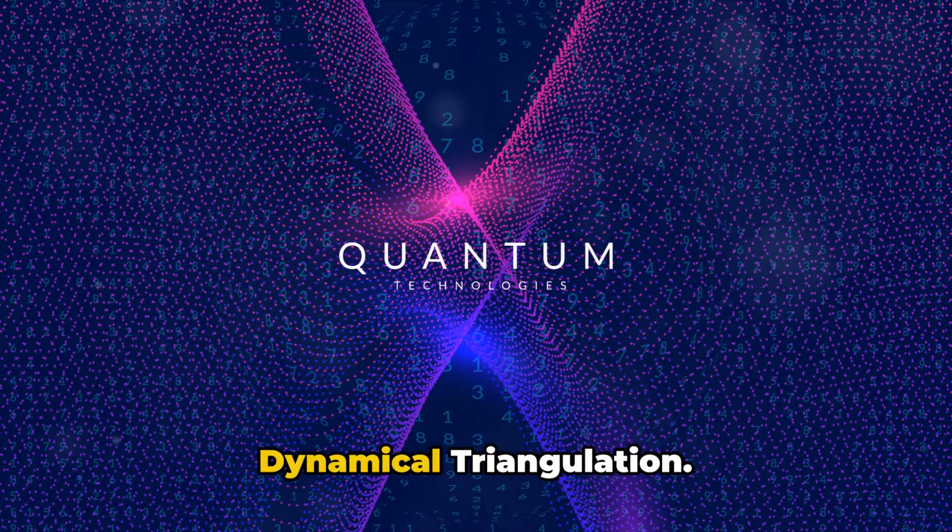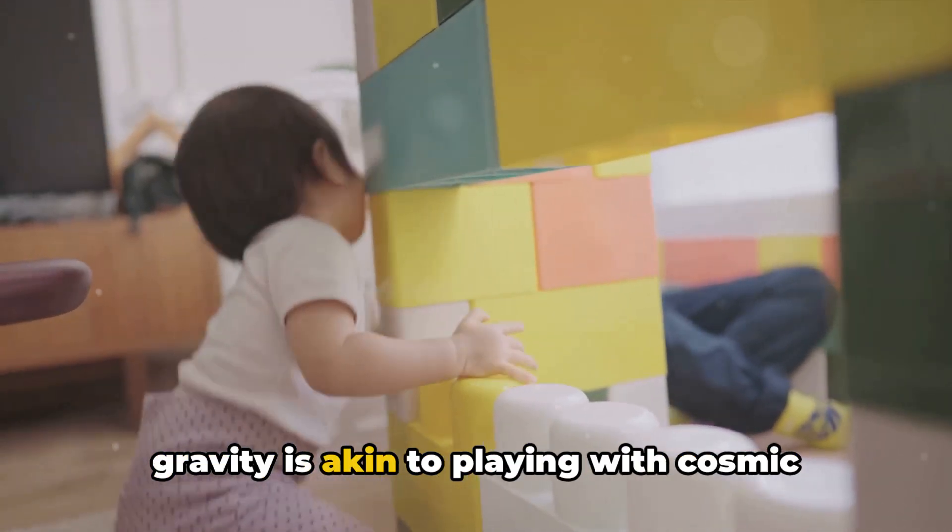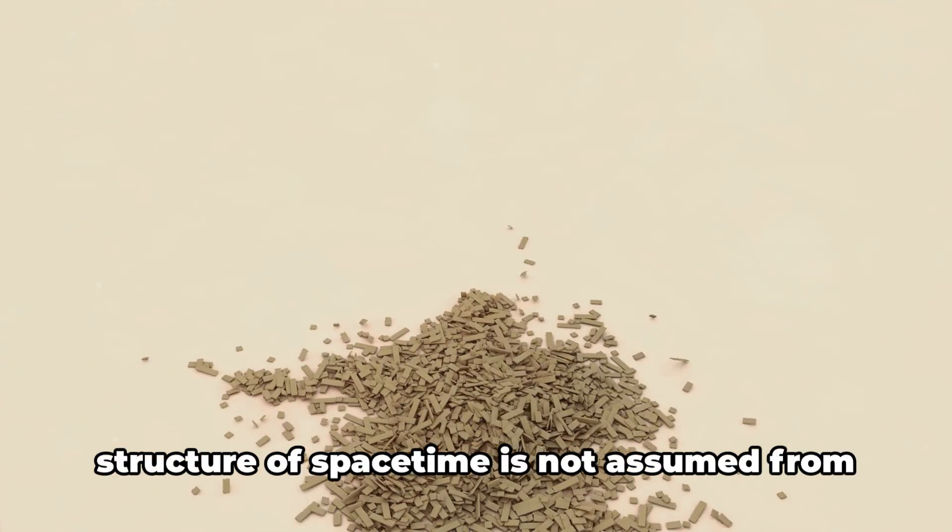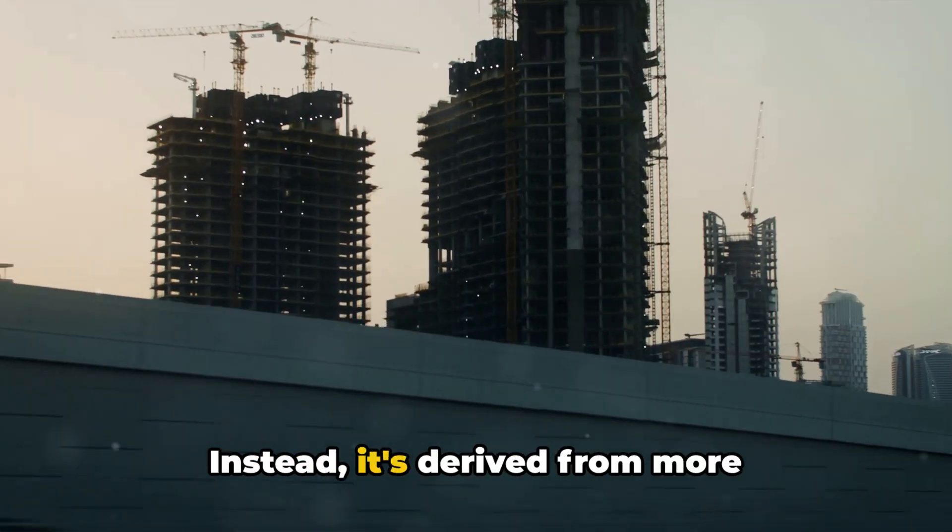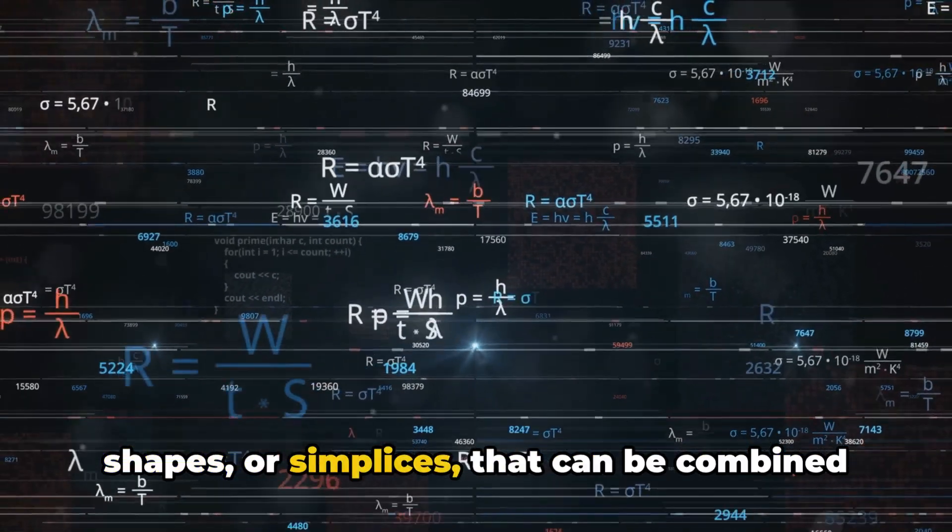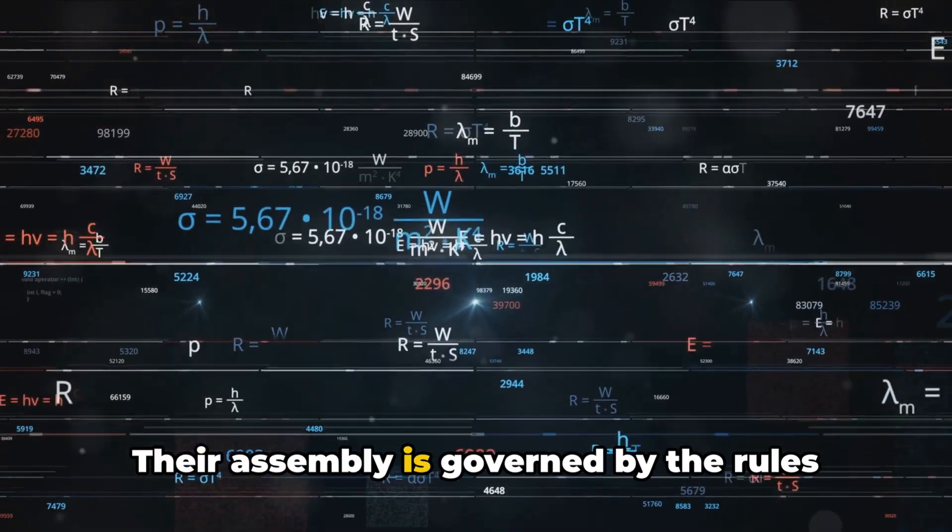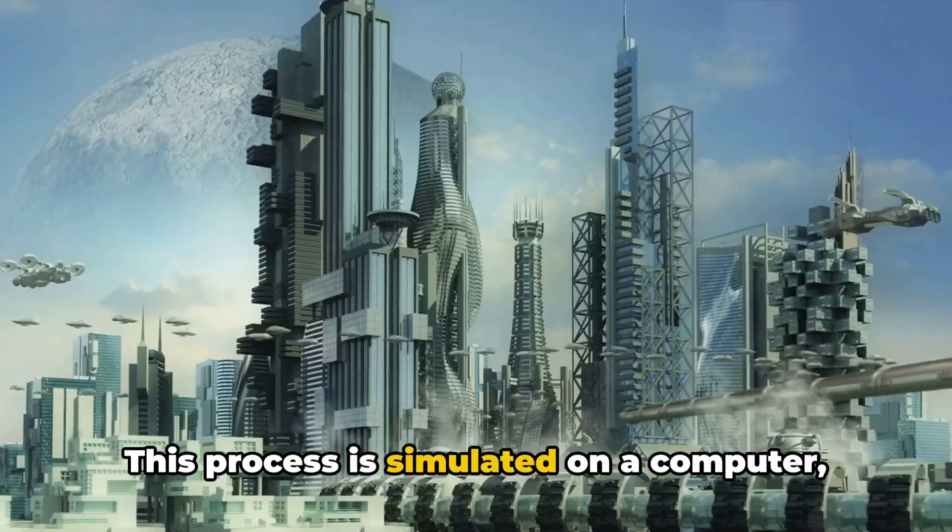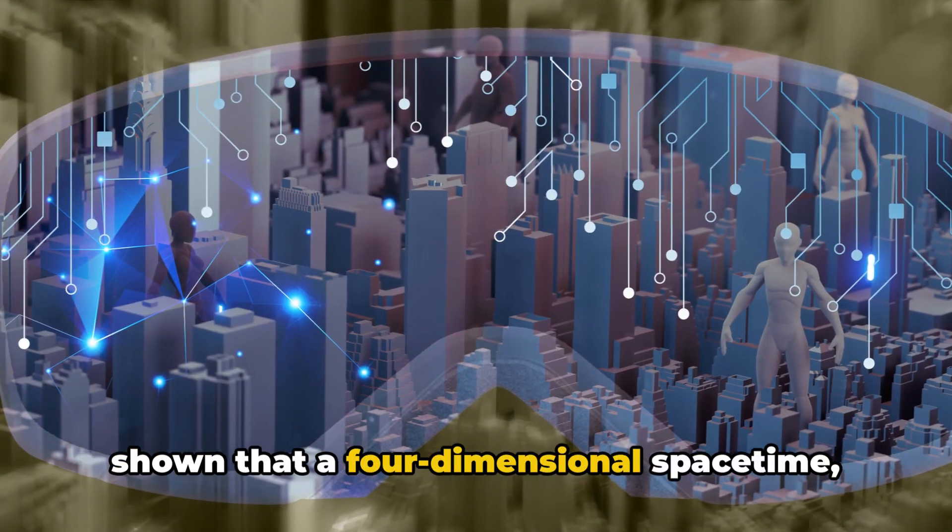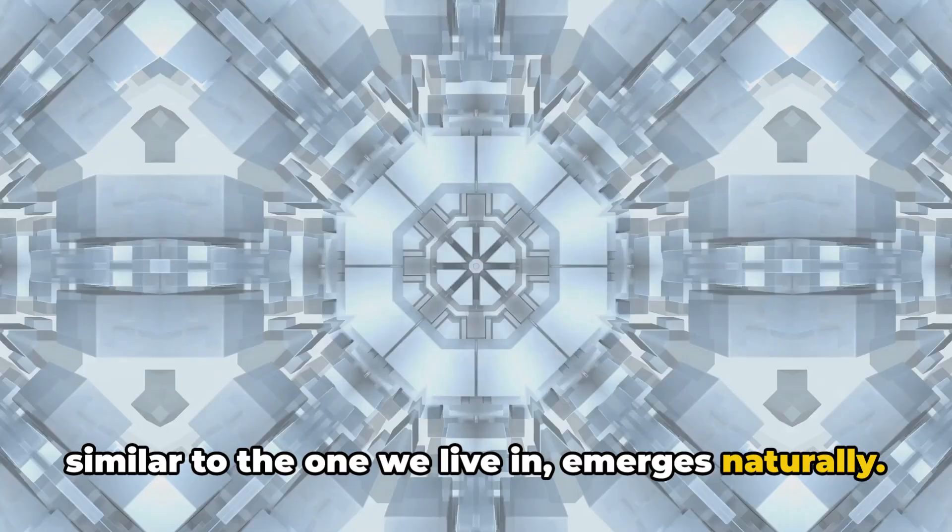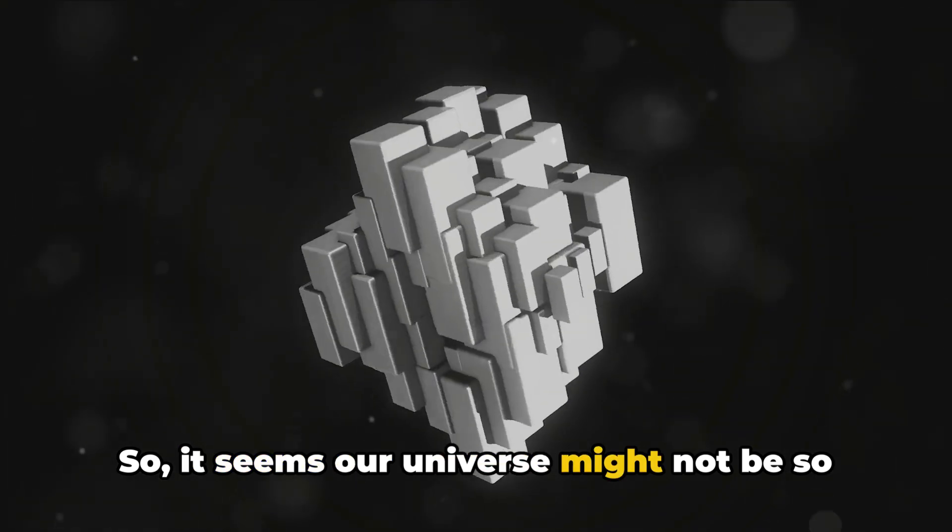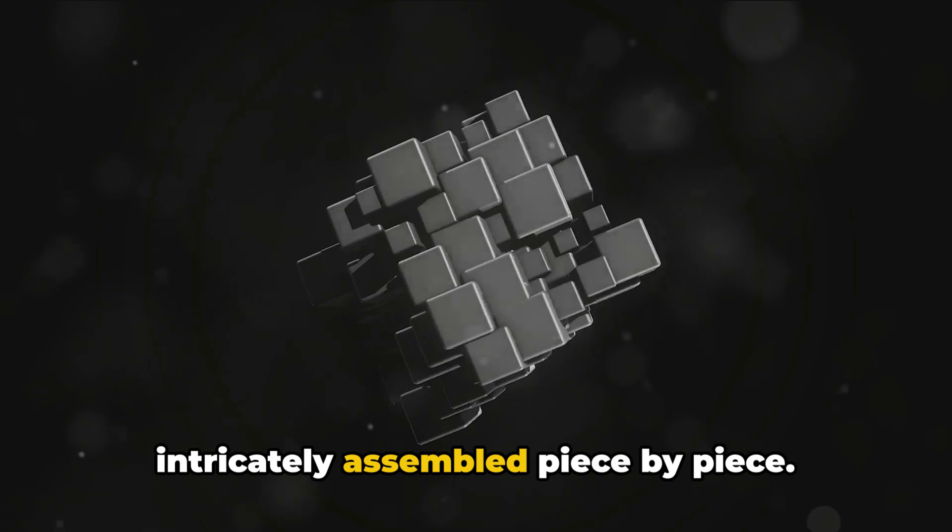Next up at number 6 is Causal Dynamical Triangulation. This intriguing approach to Quantum Gravity is akin to playing with cosmic LEGO blocks. In Causal Dynamical Triangulation, or CDT for short, the structure of space-time is not assumed from the onset. Instead, it's derived from more fundamental building blocks. These blocks are simple four-dimensional shapes or simplices that can be combined in different ways. Their assembly is governed by the rules of quantum mechanics. This process is simulated on a computer and the emergent structure of space-time is observed.